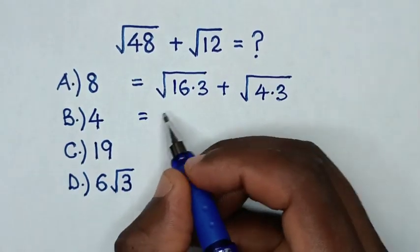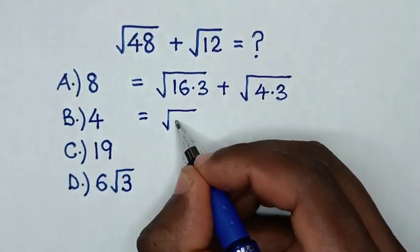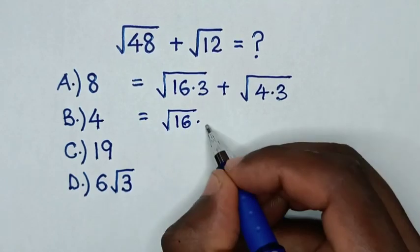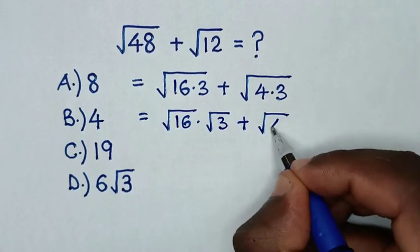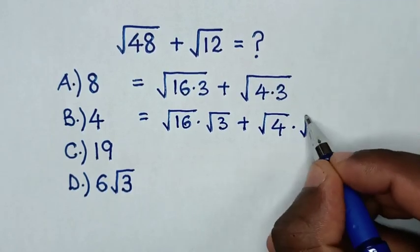Then it will be equal to square root of 16 times square root of 3, then plus square root of 4 times square root of 3.